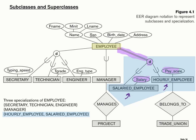Another reason to subclass by how employees are paid is that hourly employees engage in a special relationship with trade unions. This lets us be precise in our data model: a salaried employee can't be in a union, only hourly employees. This way, we cannot accidentally enroll a salaried employee into a trade union. Also worth noting, these three subclassing trees are totally independent — we could have a technician who's hourly or a technician who's salaried. These are independent ways to look at the subclassing of employees.